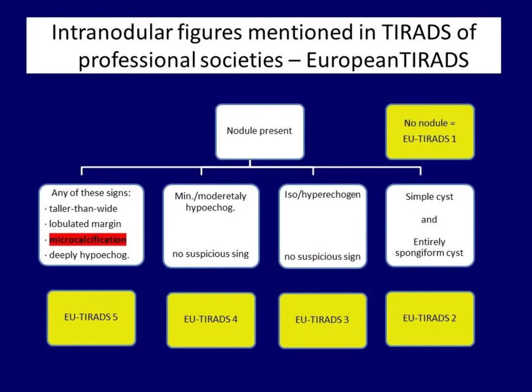Let's see the second — the European TIRADS. Pausing the video is recommended. The TIRADS of the European Thyroid Association is very similar to the former. Among echogenic figures, only micro-calcification has a role in categorization. The presence of micro-calcification itself leads to grouping the nodule into the most suspicious category. The ETA TIRADS is a bit more consistent than the AACE TIRADS, in that features with no relevance in grouping are not mentioned unnecessarily. It means that except for micro-calcification, no other echogenic figure is mentioned in the main table of the ETA TIRADS.